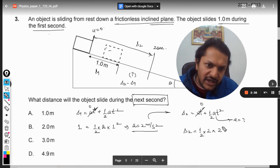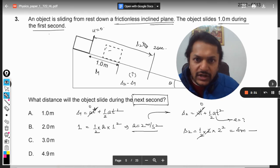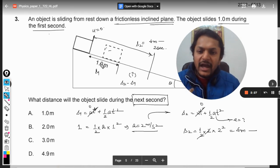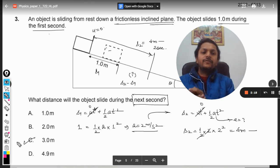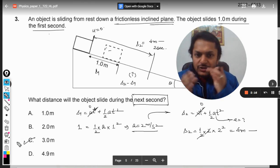And the time is also two, so the distance is coming out to be four meters. So the total distance is now four meters. This distance is one meter and they are asking what is the distance traveled in the next second. Obviously it will be four minus one and our answer will be three.